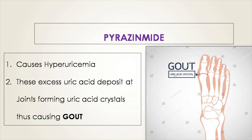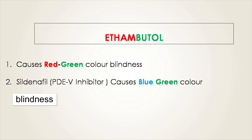Moving to the side effect of pyrazinamide: pyrazinamide causes hyperuricemia, meaning it increases the levels of uric acid in the blood. This elevated uric acid can lead to a condition called gout.